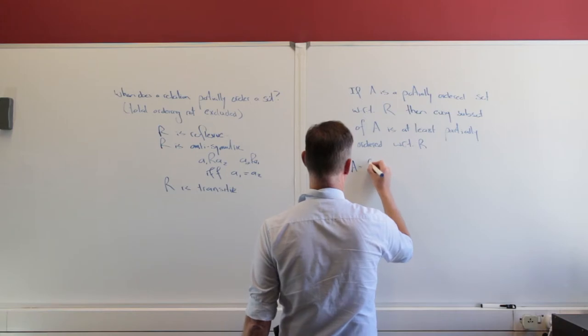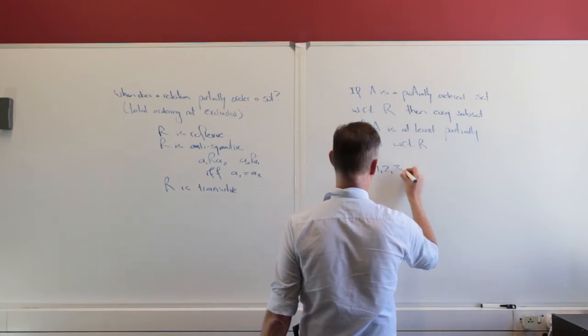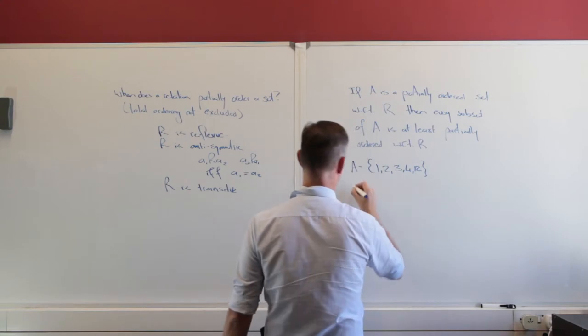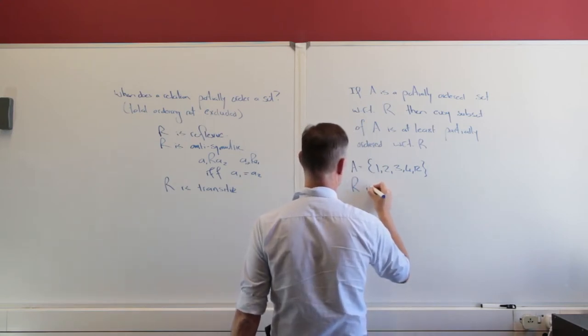then every subset of a is at least partially ordered with respect to that same relation. So remember we had the set and the set was 1, 2, 3, 4, and 12